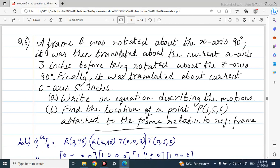Consider this problem: Frame B was rotated about the X-axis 90 degrees, then it was translated about the current A-axis 3 inches before being rotated about the Z-axis 90 degrees. Finally, it was translated about the current O-axis.